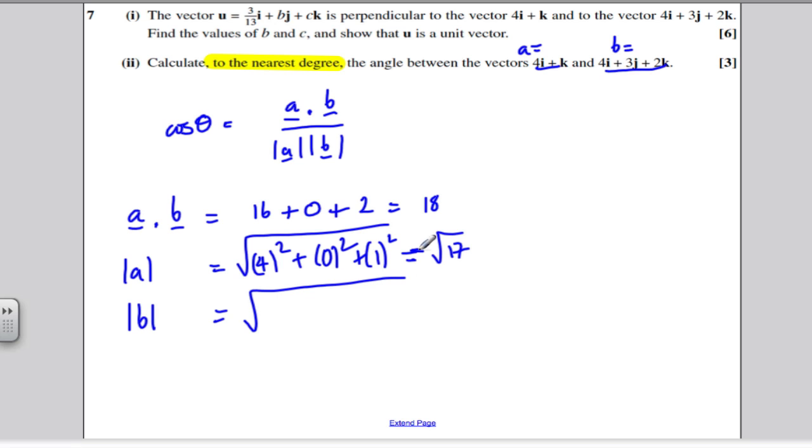And what's the modulus of B? Well, it is the square root of 4 squared plus 3 squared plus 2 squared. 16 plus 9 is 25, plus 4 is 29, so it's the square root of 29.